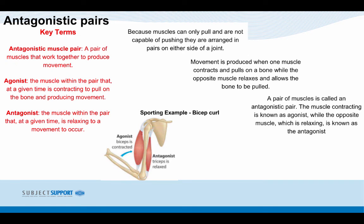Sporting example — a bicep curl. As the performer pulls the weight towards their face, causing flexion within the elbow joint, the agonist is the bicep which is contracting. The antagonist is the tricep, which relaxes. So as the movement comes up, the bicep contracts and the tricep relaxes, allowing for flexion to occur at the elbow. On the opposite phase — the extension of the elbow — the muscles switch: the tricep becomes the agonist and the bicep becomes the antagonist.